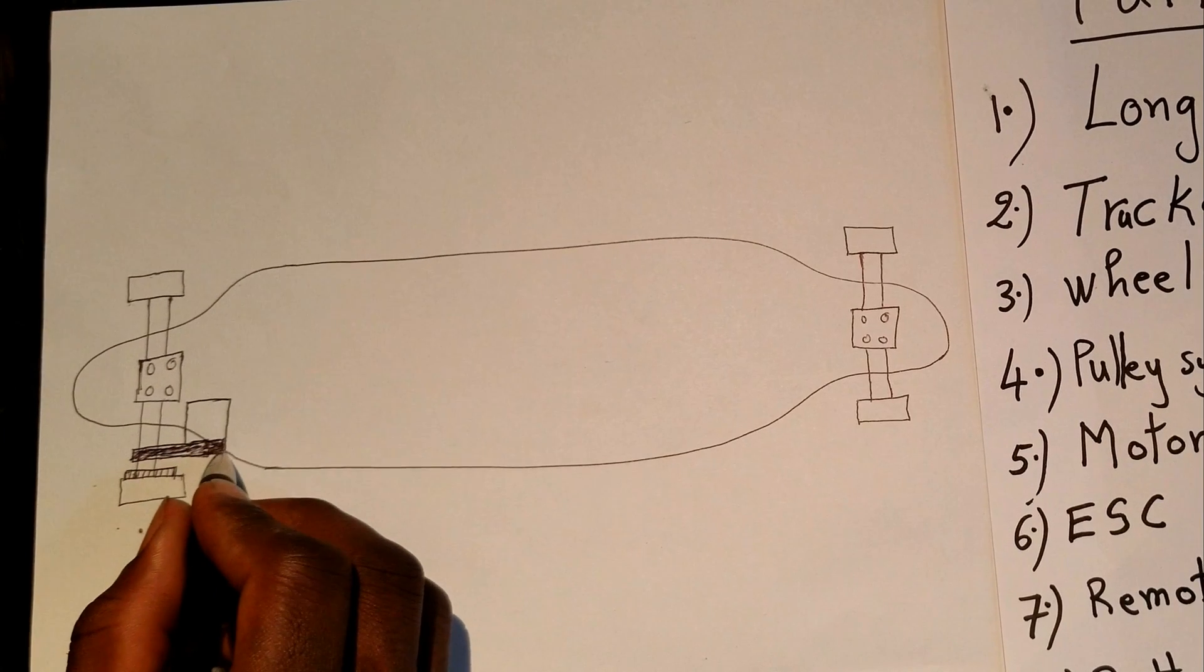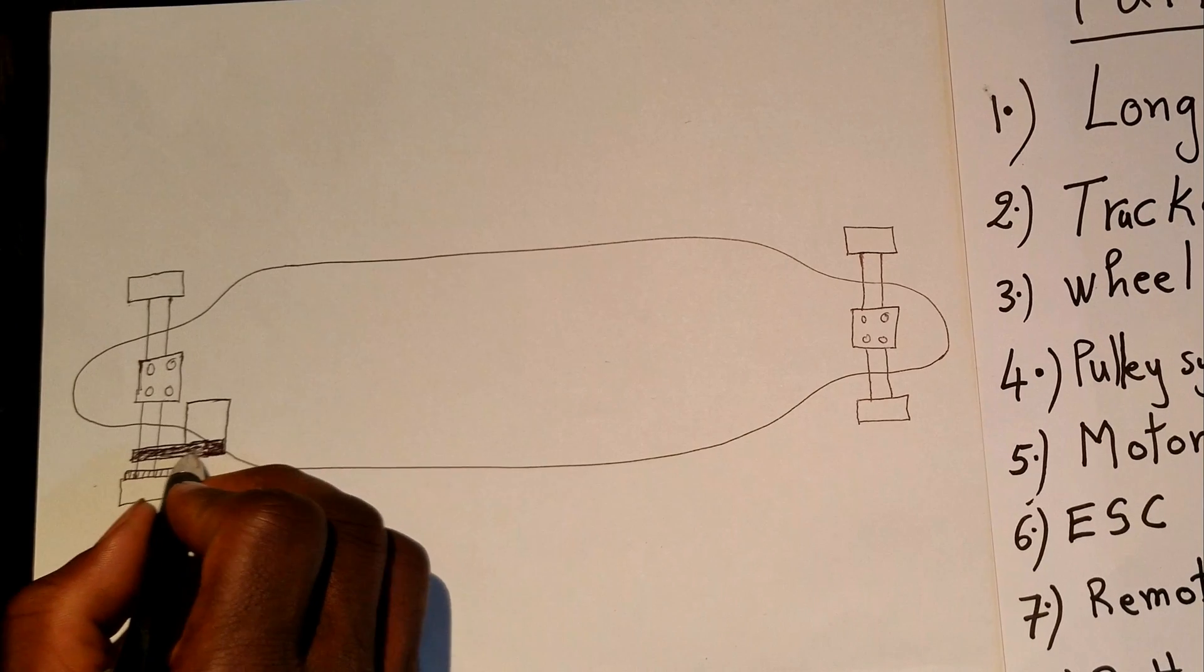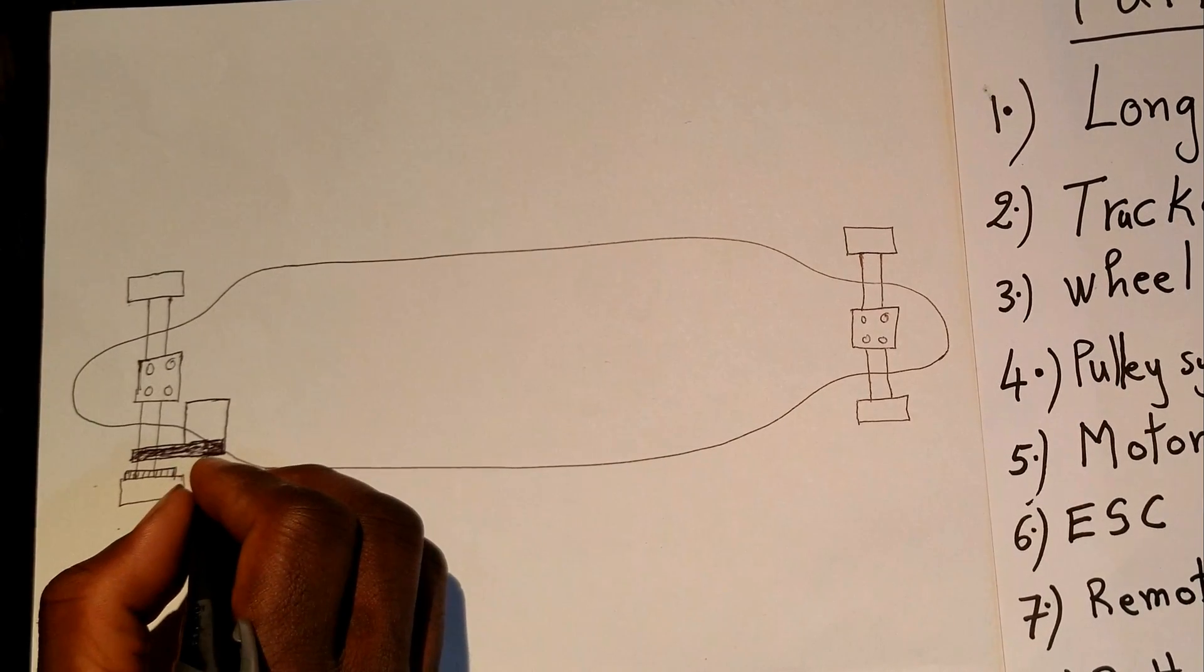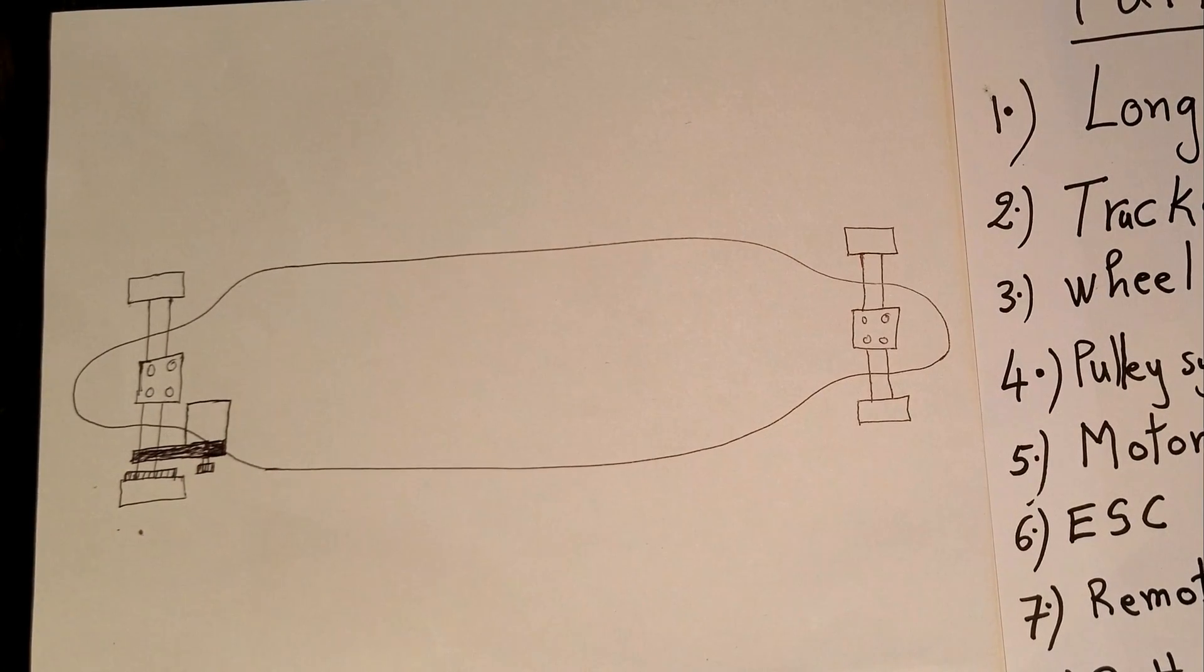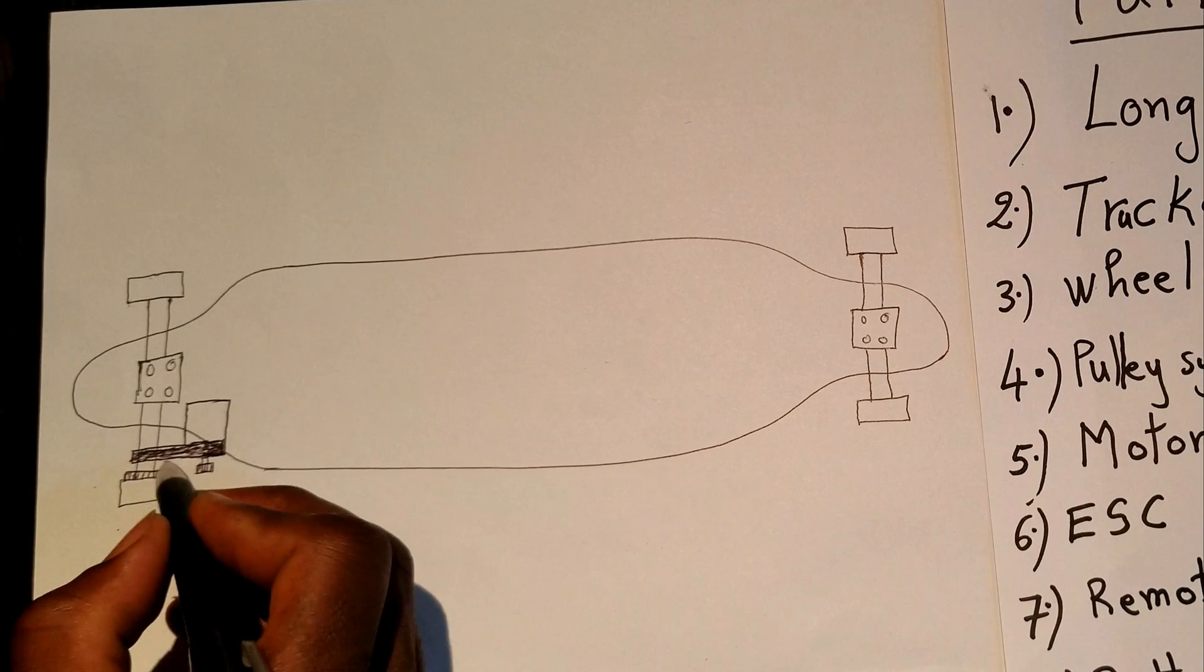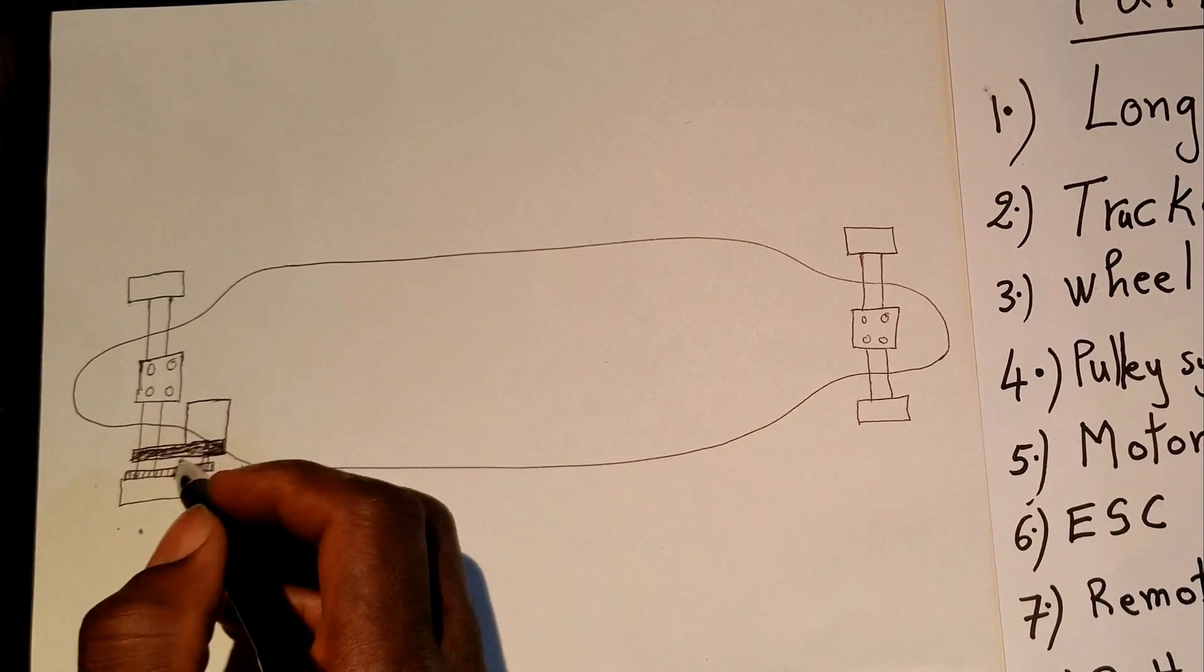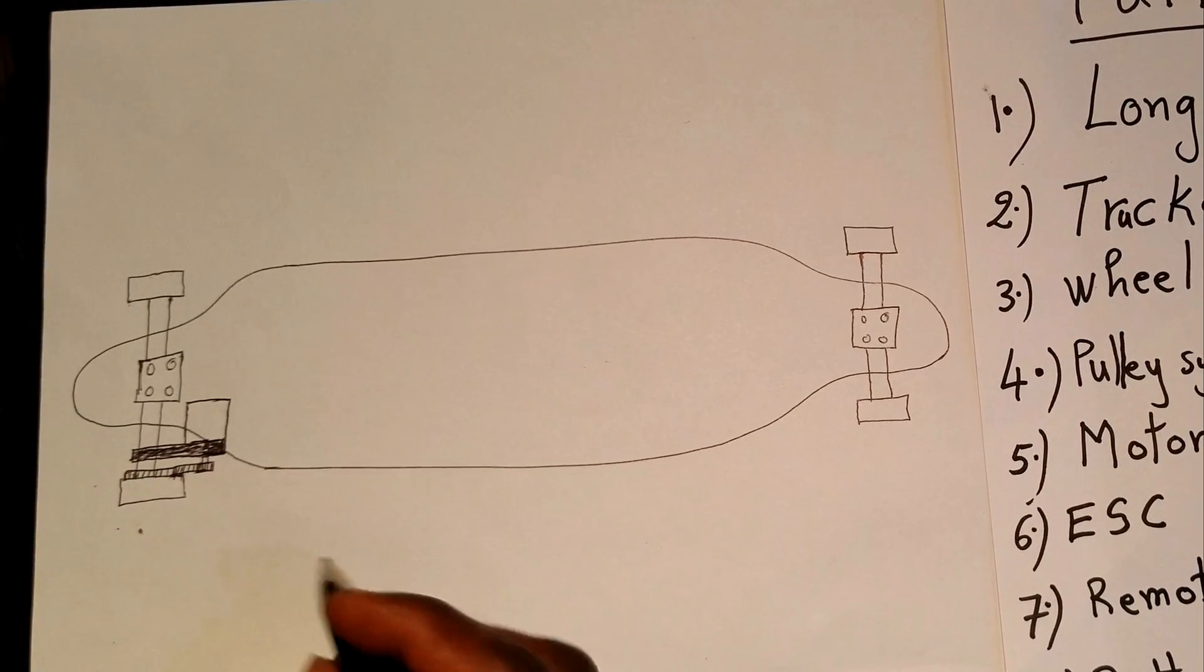So you have that mounted. Now, on the shaft of the motor you have the motor pulley mounted. And now you have to connect the wheel to the motor with a belt.